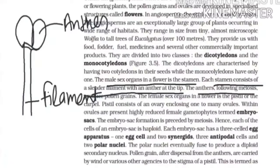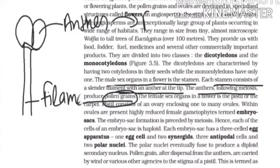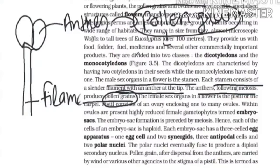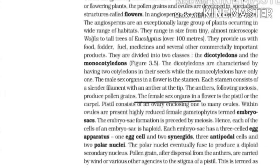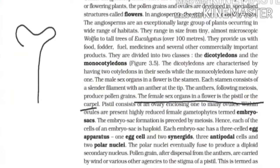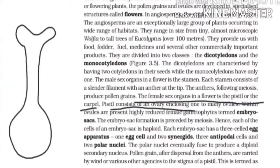The anther, following meiosis, produces pollen grains. Pollen grains are the male gametes of angiospermic plants. The female sex organ in a flower is the pistil or the carpel. The pistil consists of the ovary and contains one to many ovules inside the ovary.